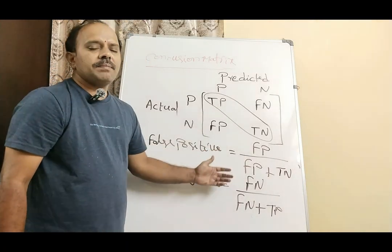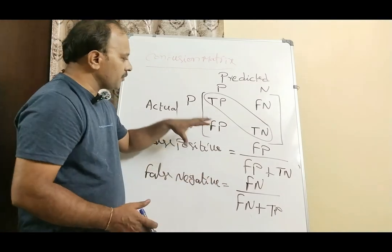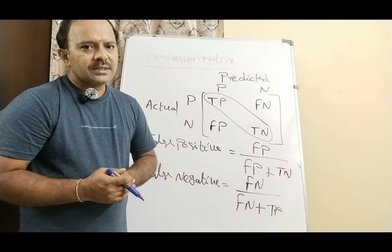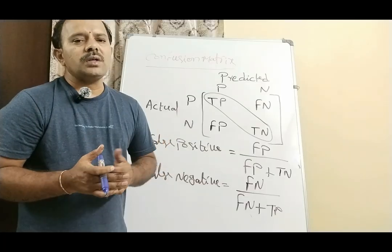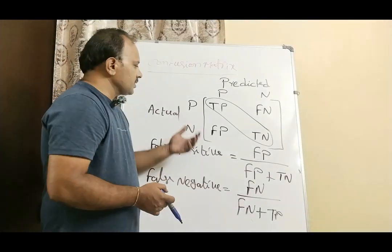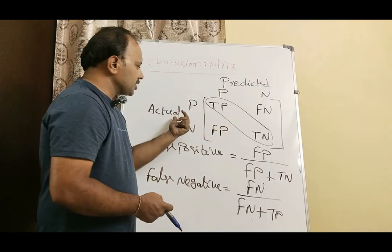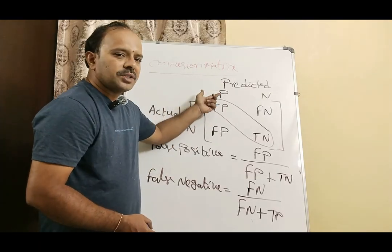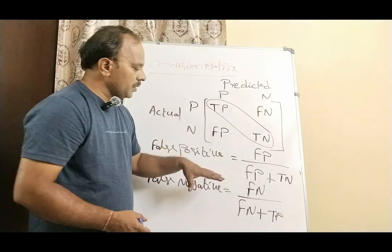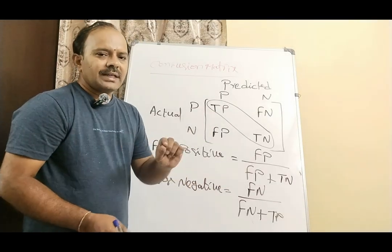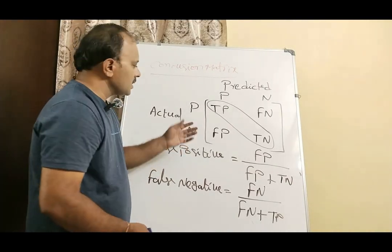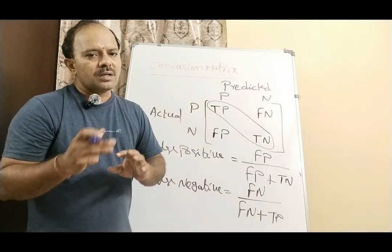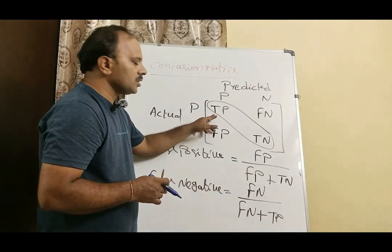These are the parameters we can determine from the confusion matrix. Once you construct the confusion matrix — a useful tool for classification problems expressed as a matrix with actual positive and negative values versus predicted positive and negative values — let me quickly recap: actual positive vs predicted positive is true positive.